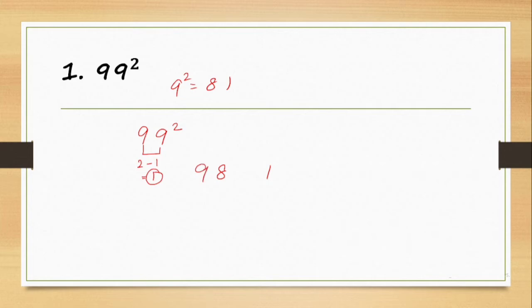1 is going to be 9, and 8 is going to be 10. So the answer is: 99 square is 9801. The next question is clear.